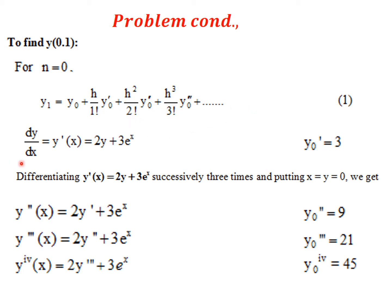From y' = 2y + 3eˣ, substitute x₀ = 0, y₀ = 0: y₀' = 2(0) + 3e⁰ = 3. For the second derivative: y'' = 2y' + 3eˣ. Substituting: y₀'' = 2(3) + 3(1) = 9.